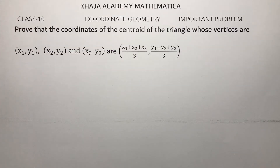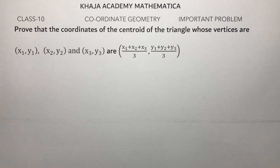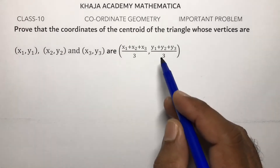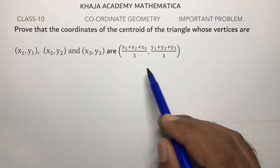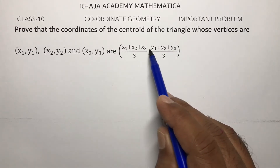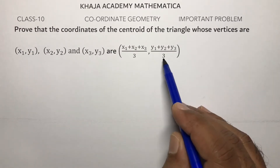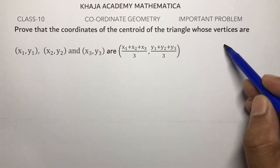Prove that the coordinates of the centroid of the triangle whose vertices are x1 y1, x2 y2, x3 y3 are x1 plus x2 plus x3 by 3, y1 plus y2 plus y3 by 3. So the centroid is given by x1 plus x2 plus x3 by 3, y1 plus y2 plus y3 by 3.